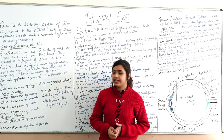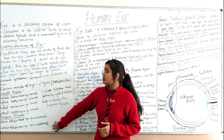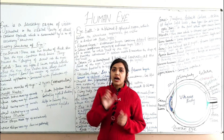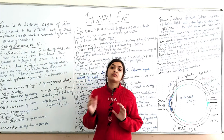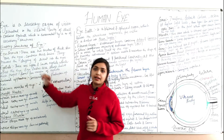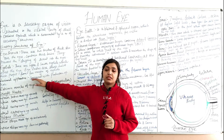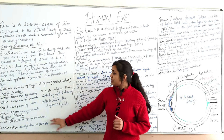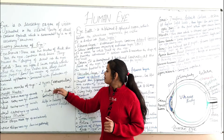To summarize the accessory structures: eyebrows are two thick arcs containing thick hairs that prevent sweat from dripping into the eyes; eyelids protect the eyes; the lacrimal apparatus produces tears; and the extraocular muscles — straight muscles, oblique muscles, and levator palpebrae — control eye movement and eyelid elevation.